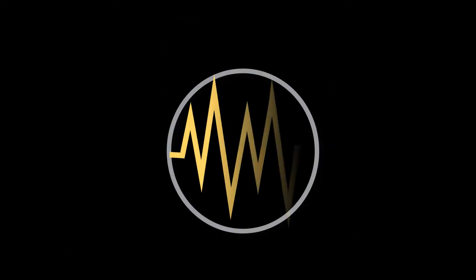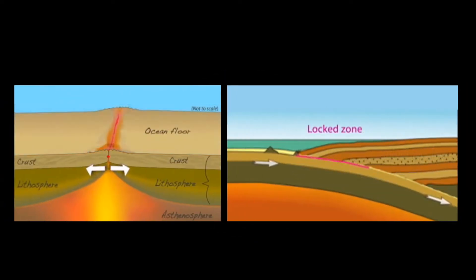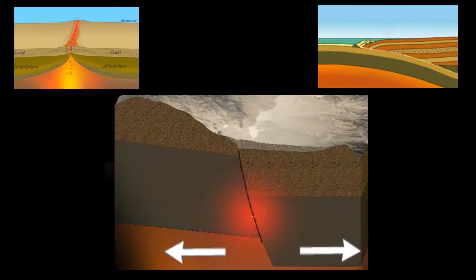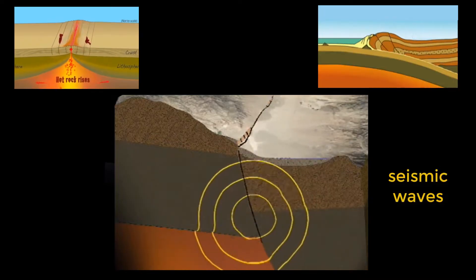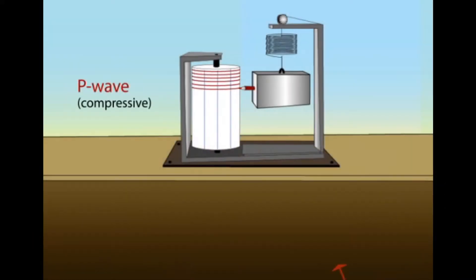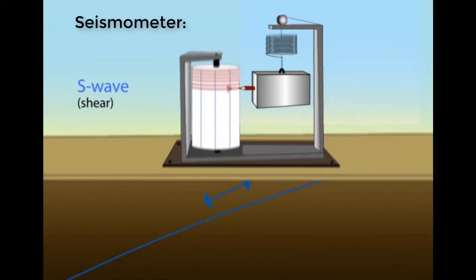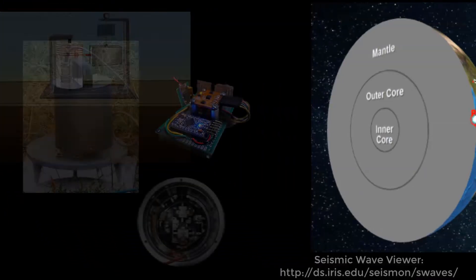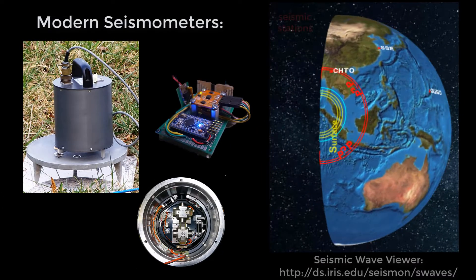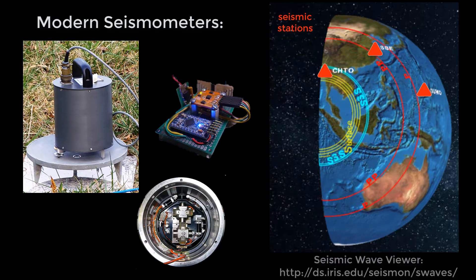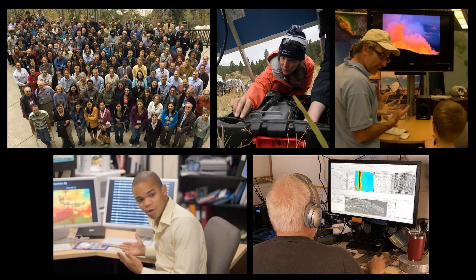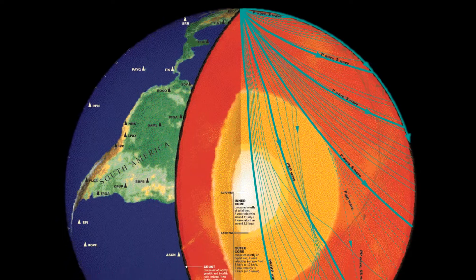Seismology is the study of earthquakes and related phenomena. When an earthquake occurs, either from large-scale plate tectonic processes or by stresses within the Earth's crust, energy is released in the form of seismic waves. Seismic waves travel through rock causing vibrations which can be measured on devices called seismometers. Networks of these sensors collect data on the duration and intensity of shaking associated with a single earthquake. Seismologists are the scientists who extract information from these seismic waves to develop an understanding of what is happening below the Earth's surface, within the crust, or all the way to the deep interior of our planet.